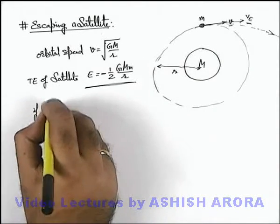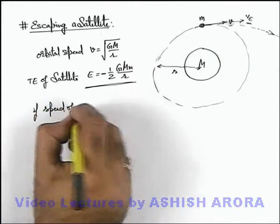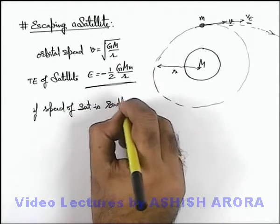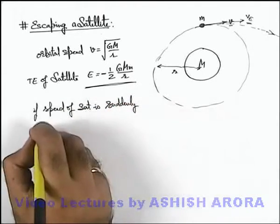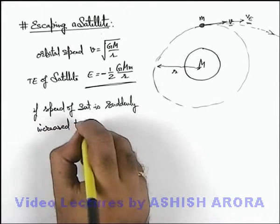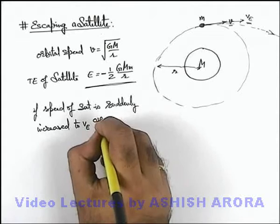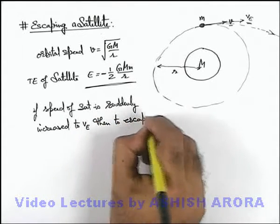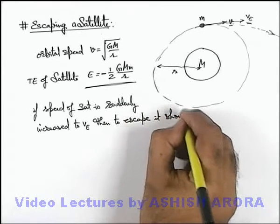So in this situation we can say, if speed of satellite is suddenly increased to v_e, then to escape, it should be such that: